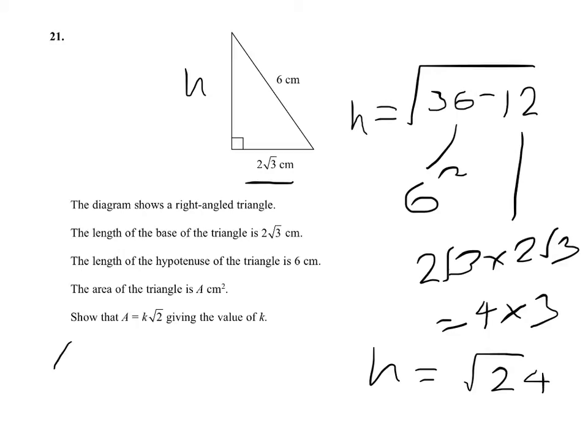So the area of the triangle will equal 1 half of the base, which is 2 times root 3, times the height, which is root 24.